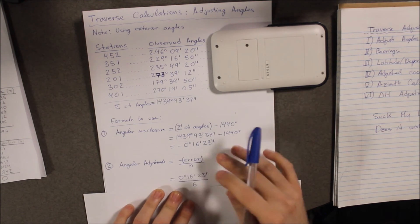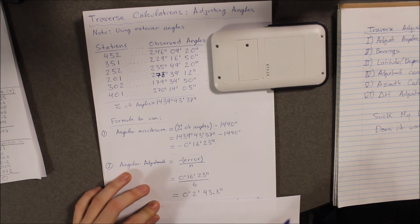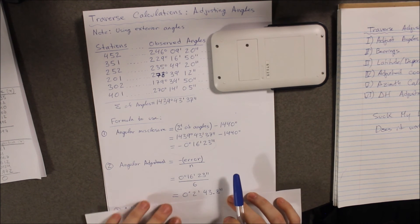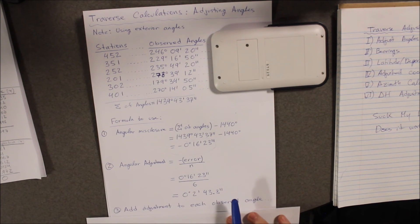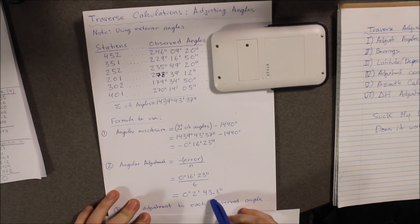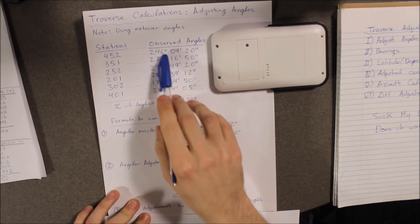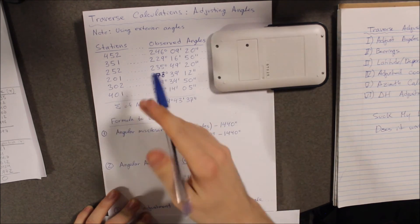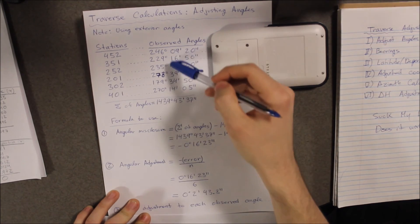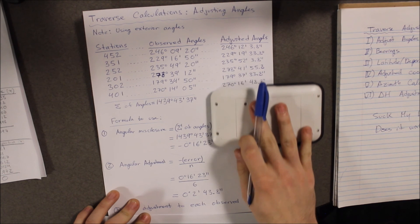Now, furthermore, once you compute this, you will be given these results. Now, this is the result that I received, of course. And what I'm going to do next is an easy step. I'm going to add the adjustment to each observed angle. What that means is I'm going to take 0 degrees, 2 minutes, 43.8 seconds and add it to the angle at 452, which is 246 degrees, 9 minutes and 20 seconds. And I will progress to do that to each one. Once I do that, I will get these results as you can see.